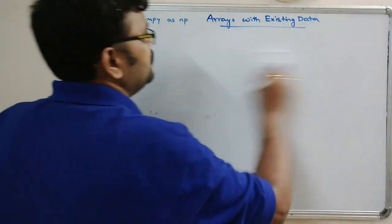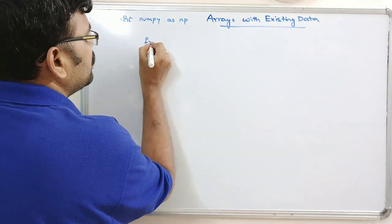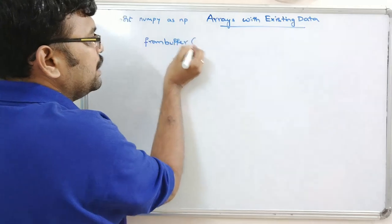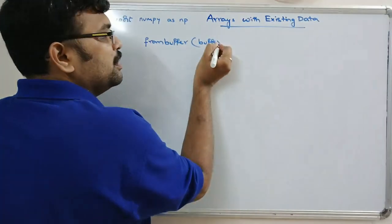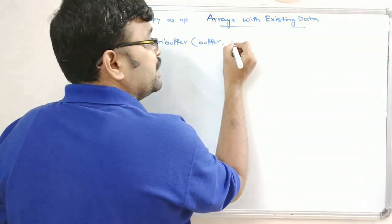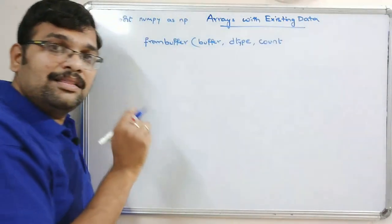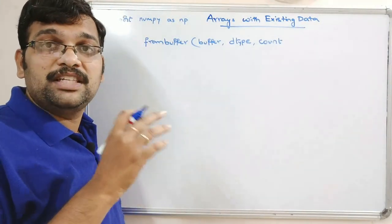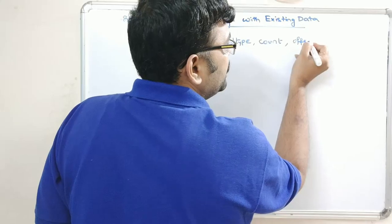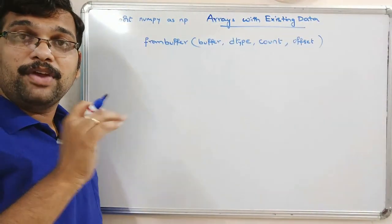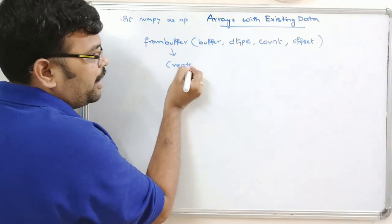The next function is `frombuffer`. It also takes four parameters: the buffer (existing data), the data type, count (the length of the returned array, so we can restrict how many elements are returned), and offset (the position from where we start creating the array).